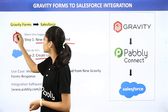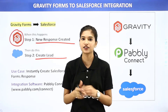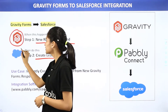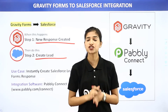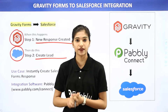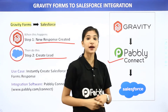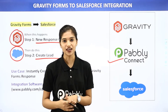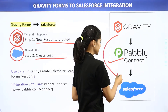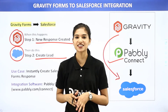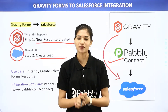Gravity Forms is a WordPress plugin that helps you to create forms in order to collect information, whereas Salesforce is a CRM platform. The issue here is that these two software applications don't have any integration between them, and that is why we are going to use Pabbly Connect — an integration software which will help you to transfer data from Gravity Forms to Salesforce. The best part is you don't require any knowledge of coding.